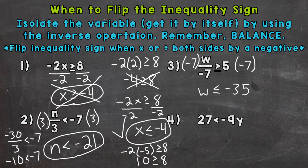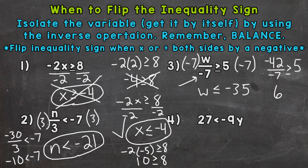So w is less than or equal to negative 35. Let's test negative 42 since it's less than negative 35 and compatible with dividing by negative 7. Negative 42 divided by negative 7 is positive 6, which is greater than 5 — that's true. So this is our answer to number 3, and anything less than or equal to negative 35 is a solution for w.